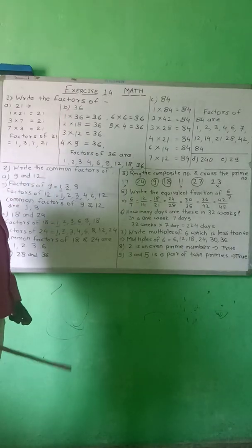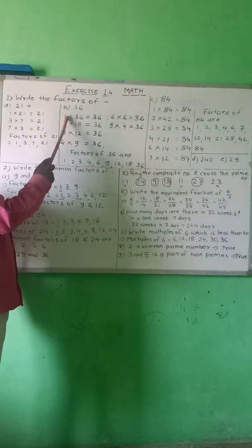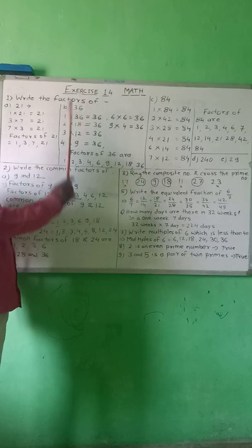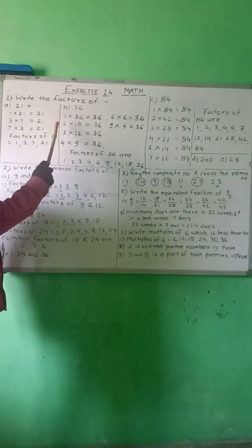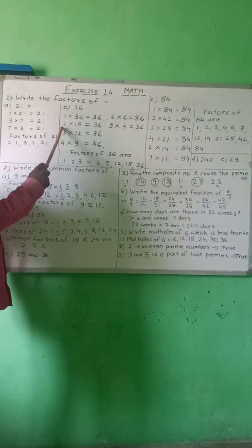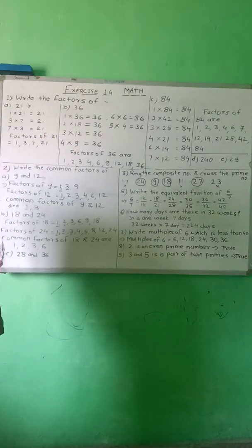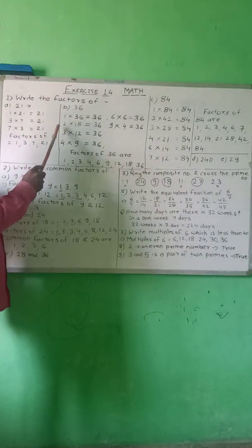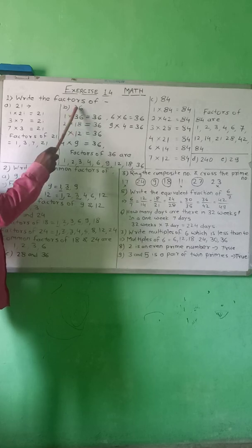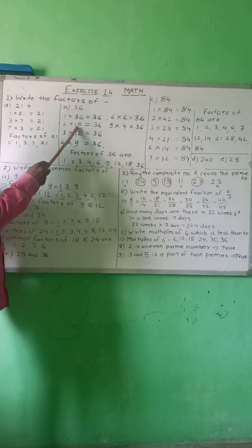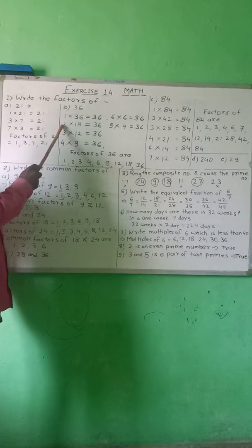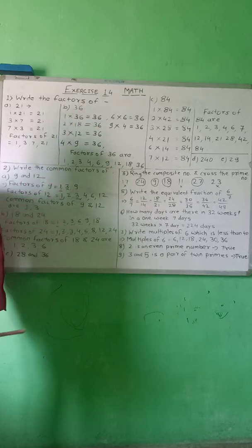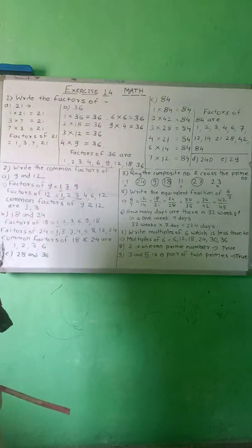Again, we start from 1. 1 is a factor of every number, so 1 multiplied by 36 is equal to 36. Next, check whether 2 is a factor of 36. You divide: 36 divided by 2 gives 18, so 2 is a factor of 36. Then check 3: 3 times 12 is 36, so 3 is also a factor of 36.